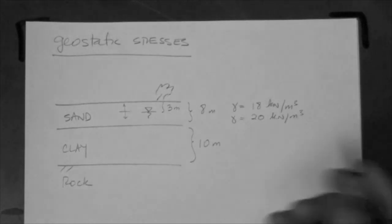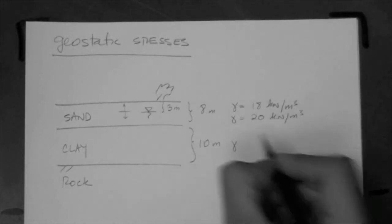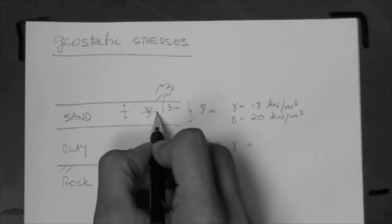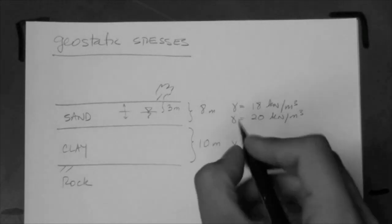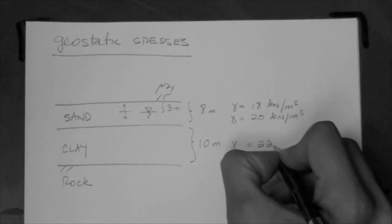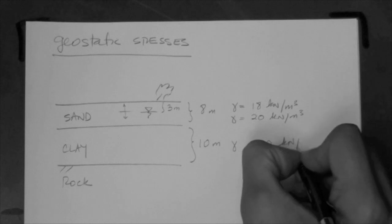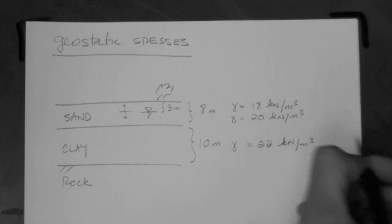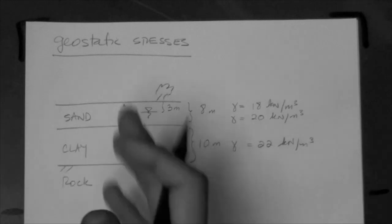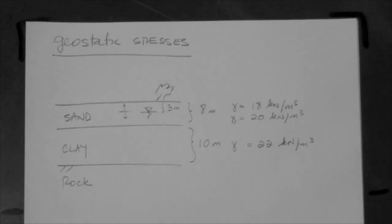For the clay layer, of course it's saturated because the water table is up here, so let's say it's 22 kilonewtons per meter cubed. So the question is: what is the geostatic stress here? Now, that is an incomplete question because we realize that stress acts at a point.